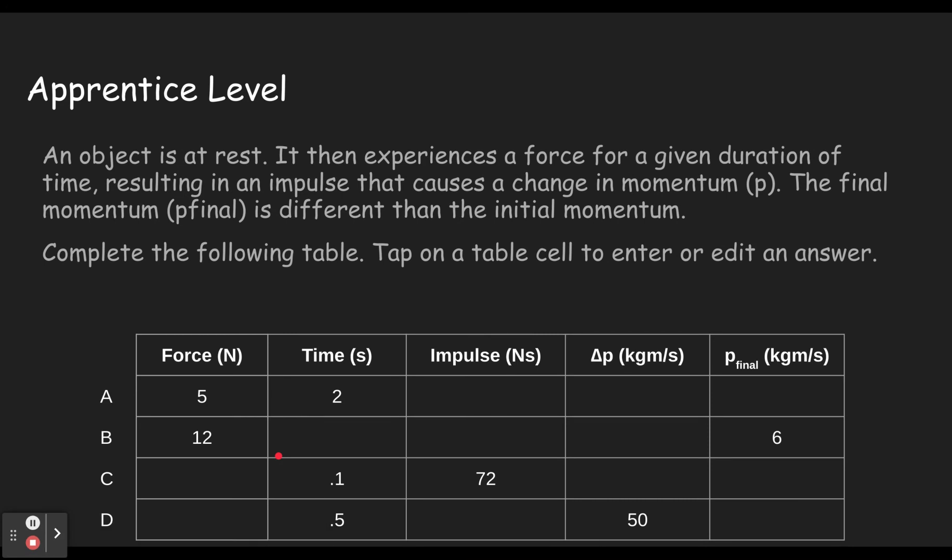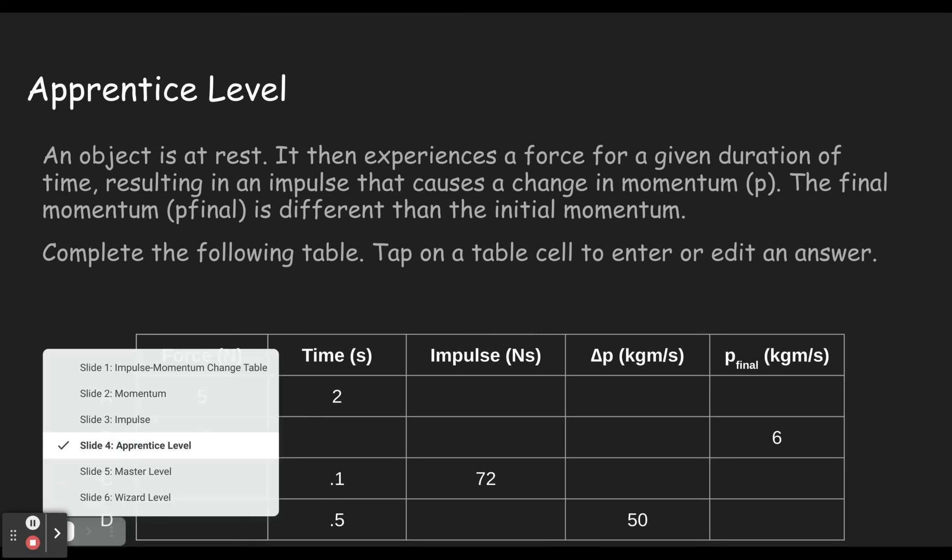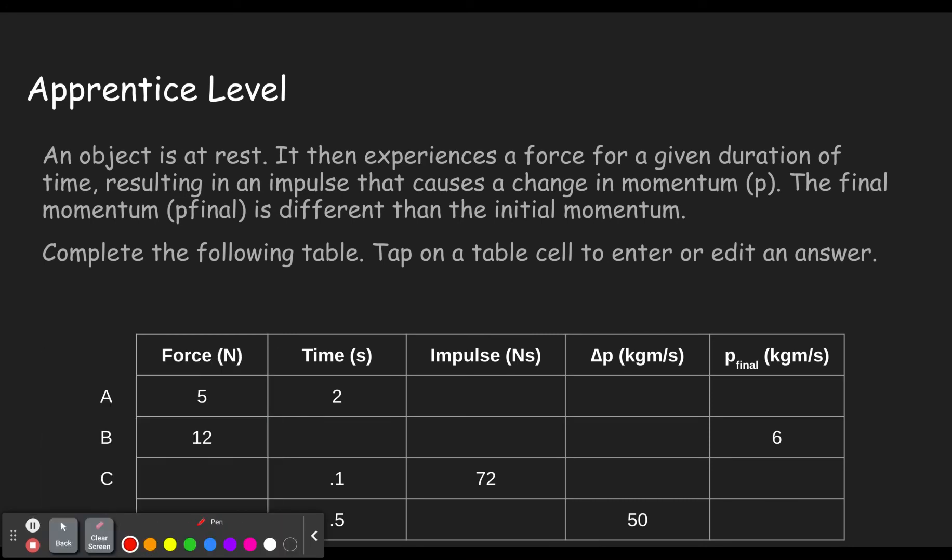All right, so here is the apprentice level. You can see that it asks an object, it starts out with an object at rest. So that's really important for this apprentice level to notice that, because we're going to be asked to find the final momentum over here. You can only do that if you know that the object starts out with zero momentum.